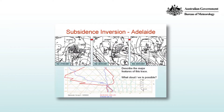Here's a sequence of events showing an inversion forming in Adelaide. On 00 UTC on the 27th there's a low pressure system just to the south of Adelaide, with a strong south to southwesterly flow. On 00 UTC on the 28th, Adelaide is under the influence of a high, and continuing on to the 29th.